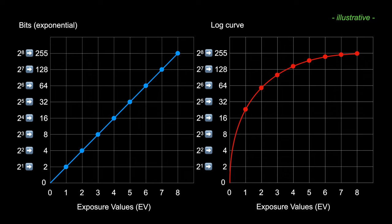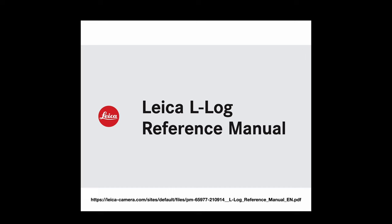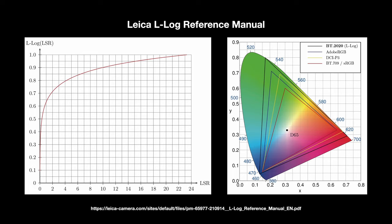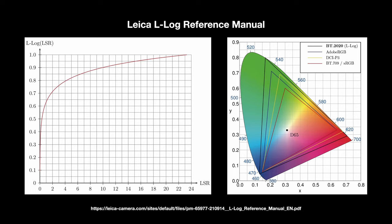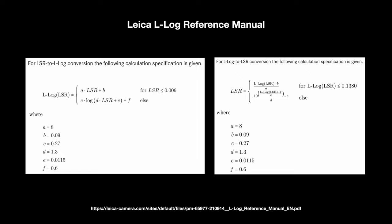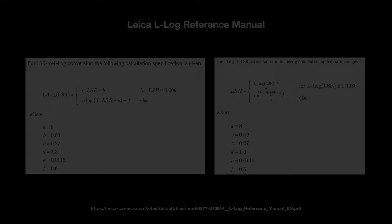Leica uses the term linear scene reflection (LSR) in their L-Log reference manual — I'll post the link in the description. They provide the L-Log curve and show that the L-Log color space is larger than all other spaces, giving richness in tonality. Leica also provides in that manual the mathematical transformation formulas between LSR and L-Log and vice versa, which is very helpful for those familiar with numbers and formulas.